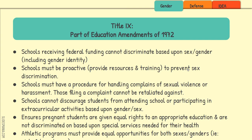Now let's look at Title IX, part of an education amendment from 1972. It focuses on the idea that schools receive federal funding and therefore cannot discriminate based upon sex or gender, including one's gender identity. There's a range and continuum of gender identities that people can identify with. Basically, if a school receives federal funding, it cannot discriminate based on any of those genders or sexes. Schools must be proactive in providing resources and trainings to prevent sexual discrimination.